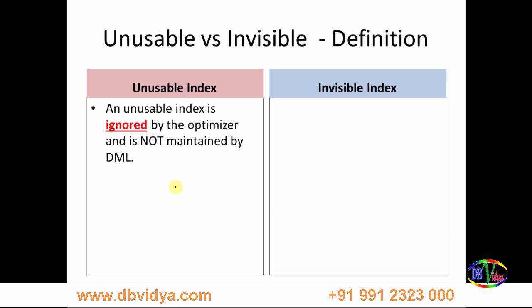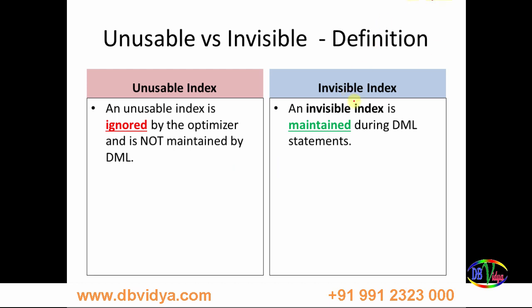Coming to invisible indexes: an invisible index is maintained during DML statements. The optimizer may ignore it, but the statistics are all maintained for invisible indexes during DML statements. So to summarize: an unusable index is ignored by the optimizer and not maintained by DML statements, whereas an invisible index is maintained during DML statements.